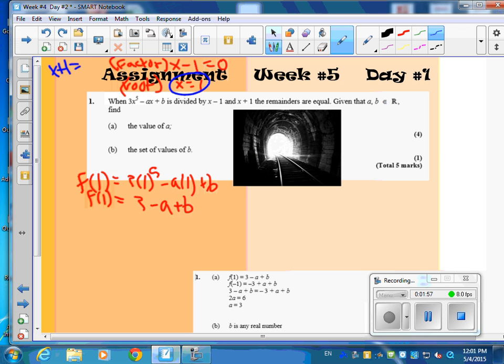We put a 1 in because 1 is one of our roots. Well, x plus 1 is another factor. What's the root for that one? Negative 1. So let's check that out. So f of negative 1 is equal to 3 times negative 1 to the 5th minus a times negative 1 plus b. So that simplifies to negative 3 plus a plus b.